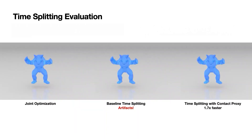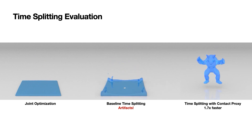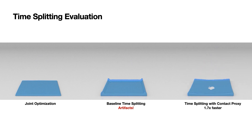When it comes to viscous fluids, situations get worse for the baseline time-splitting scheme. In this example, we drop a viscous armadillo onto the ground. For baseline time-splitting, severe artifacts can be observed at the boundary and the fluid surface cannot finally calm down. In contrast, using the contact proxy, our proposed time-splitting scheme produces consistent simulation results with joint optimization.